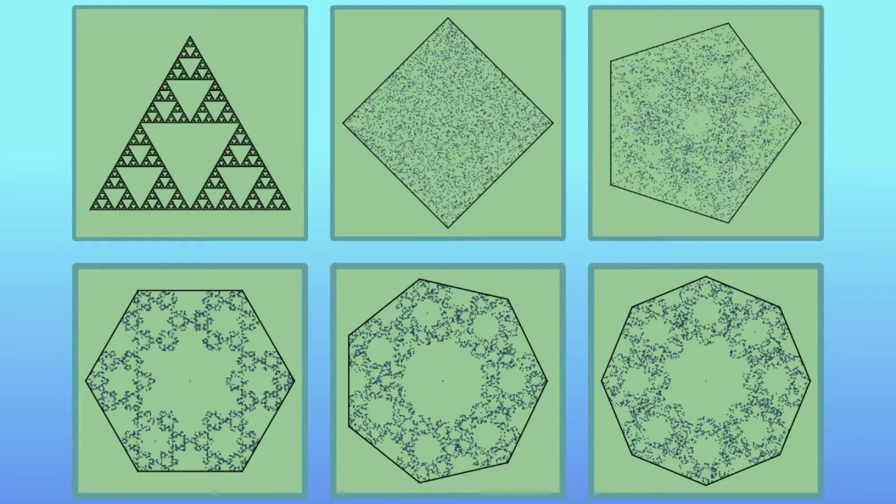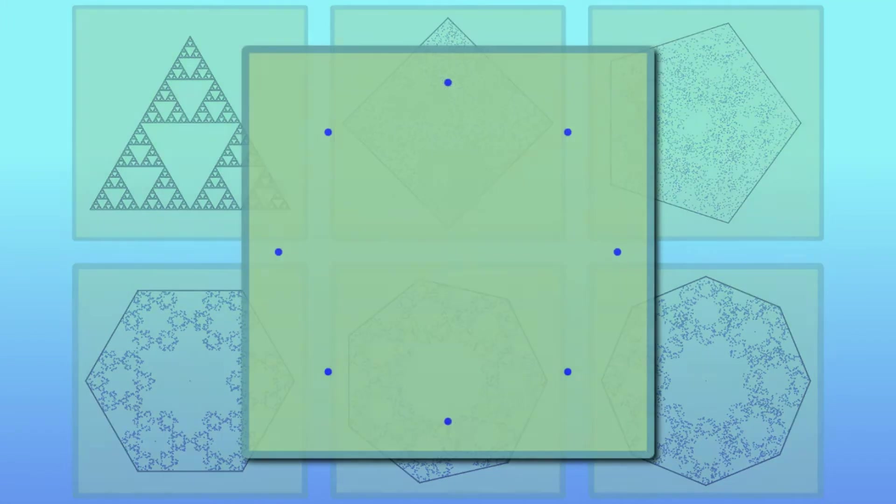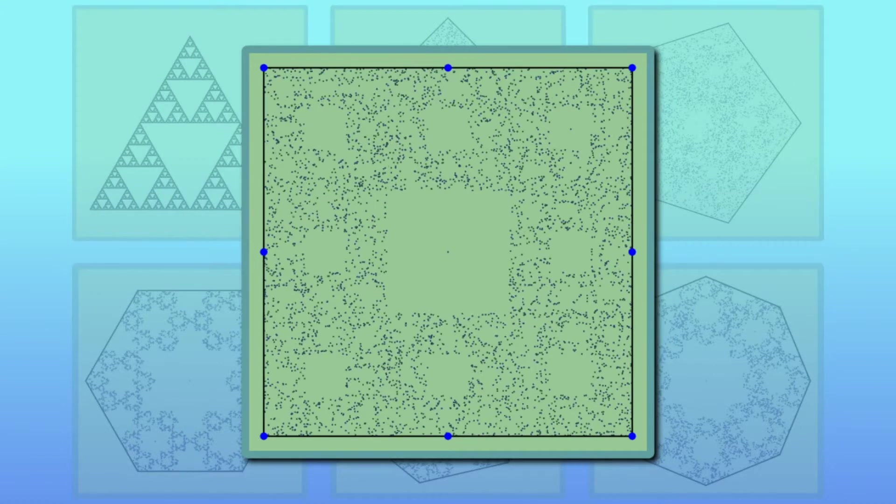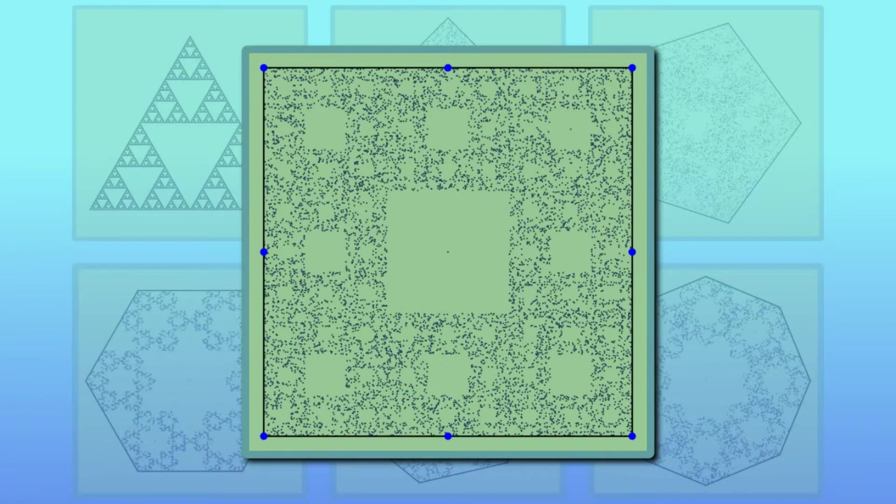However, even this is not entirely true. If we rearrange the 8 vertices in a more square-like shape, and then run our process with the two thirds ratio, then again we get a very interesting final result. This is a square built up from smaller and smaller squares.